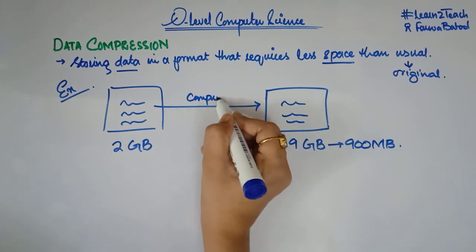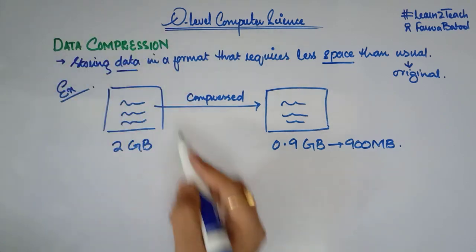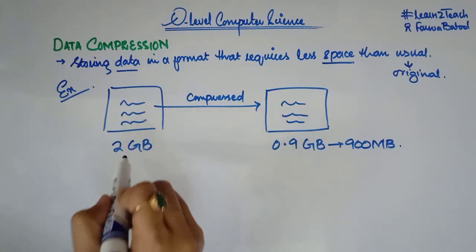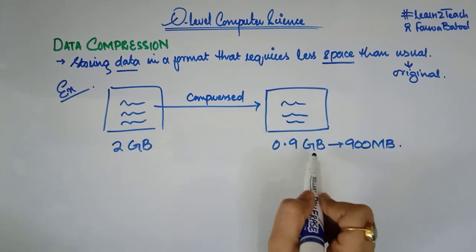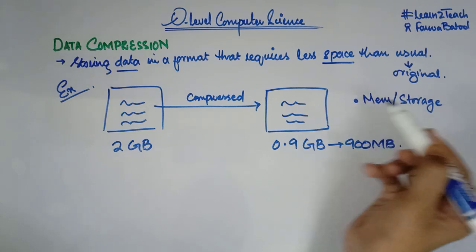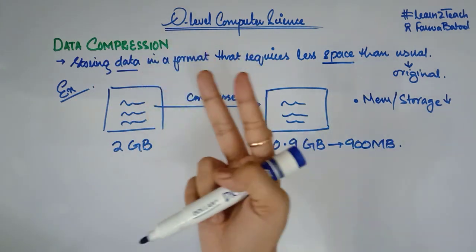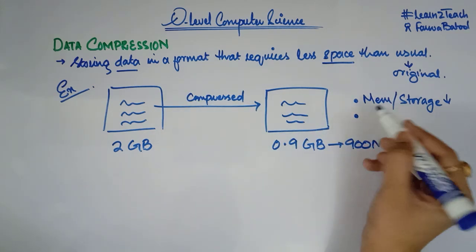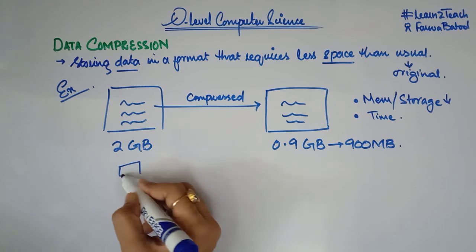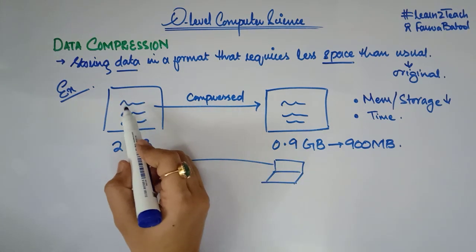When the file has been compressed, why do we need it? The first benefit of data compression is that we need lesser memory space. This file was having 2 GB of memory and now we are having only 0.9 GB. So the storage required to store the particular file has been reduced.